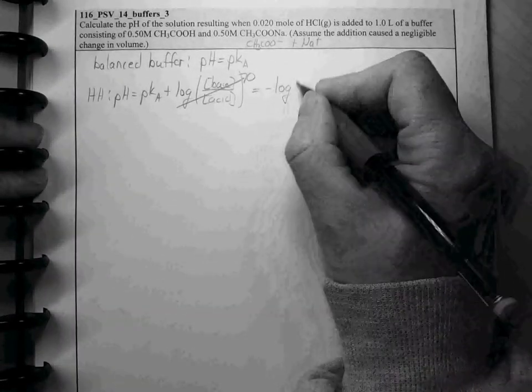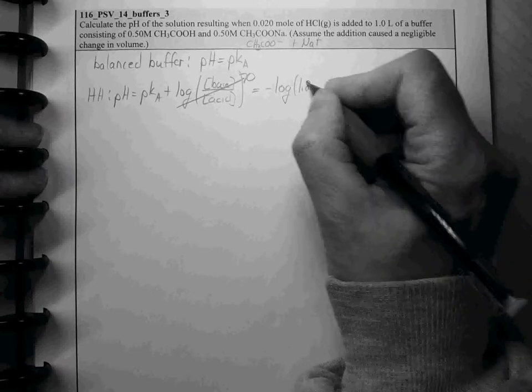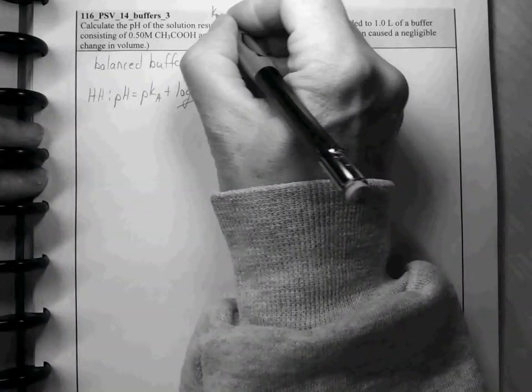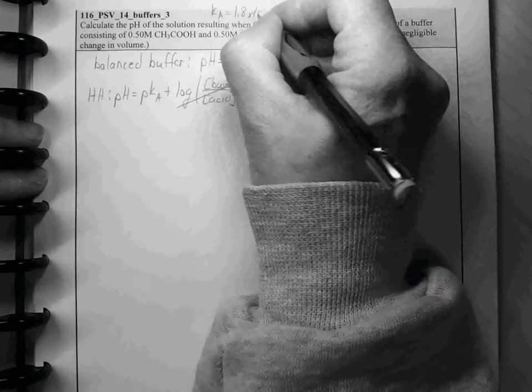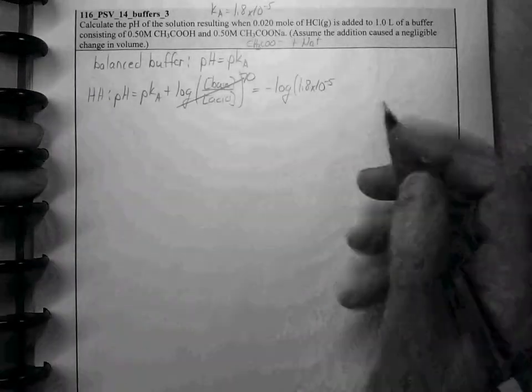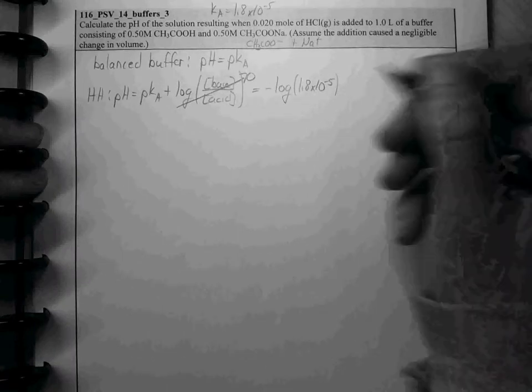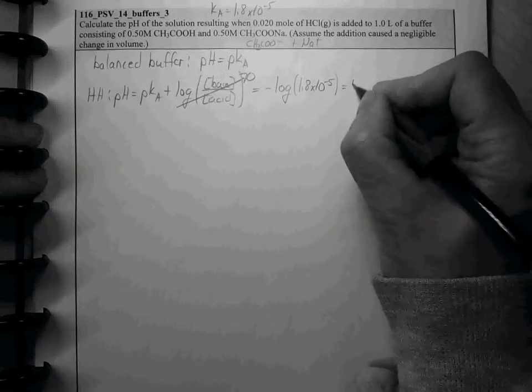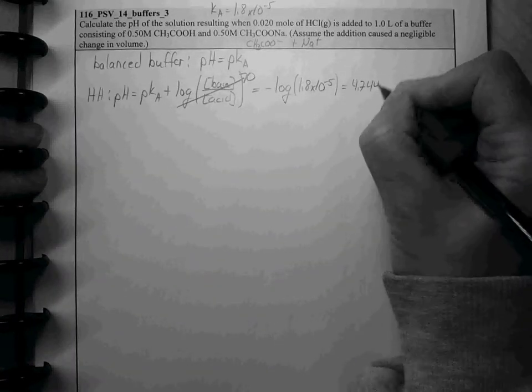which is negative log of 1.8 times 10 to the minus 5. It wasn't given to us here, but we can easily look that up for acetic acid if we don't happen to remember it. And this is 4.7447.